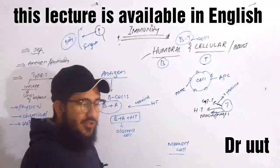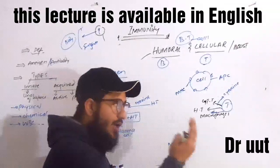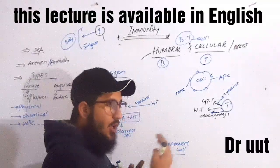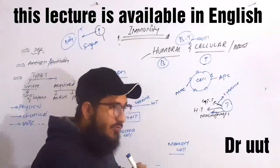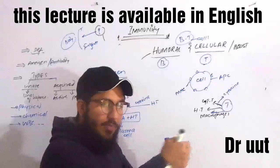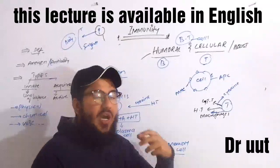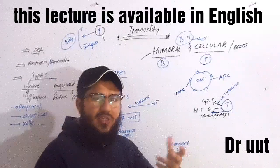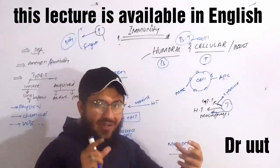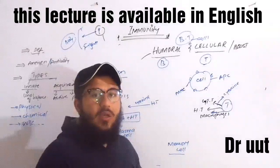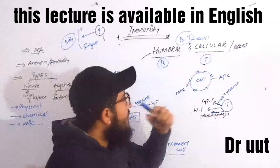Immunity is the body's ability to fight against foreign particles. These foreign particles are biologically and pathophysiologically called antigens. The body's ability to fight against these antigens is called immunity. Now we will define humoral and cellular immunity.